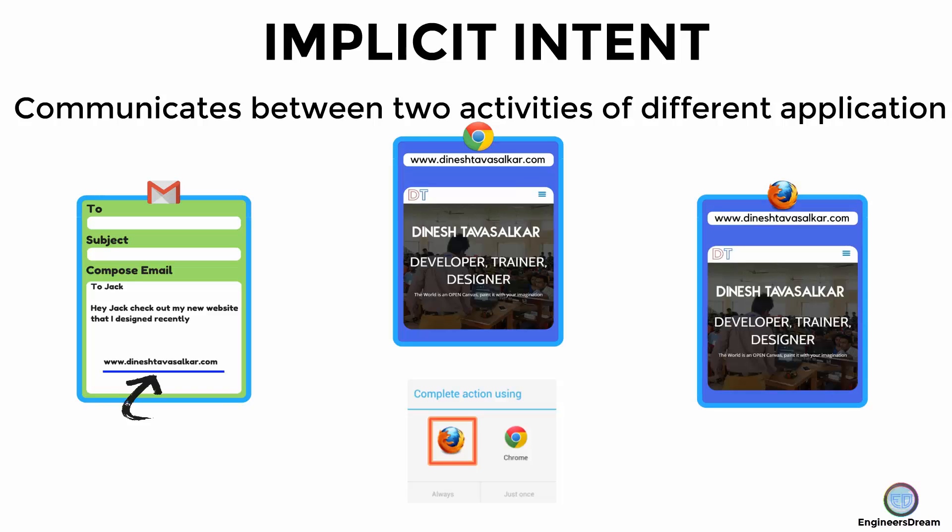So to summarize: we use explicit intent when we want to communicate between two activities inside the same application, and we use implicit intent when we want to communicate between two activities inside different applications.